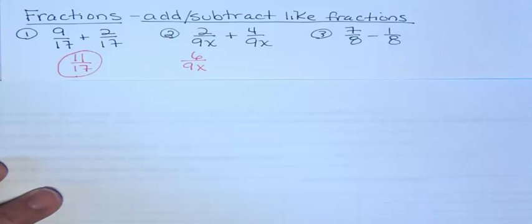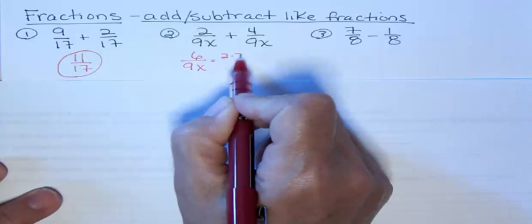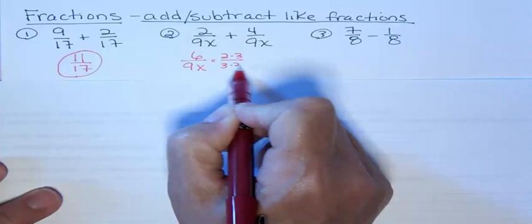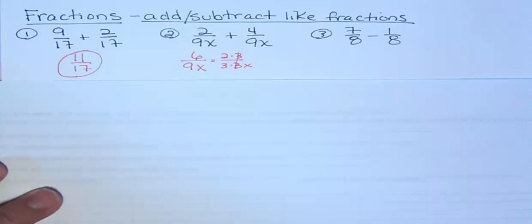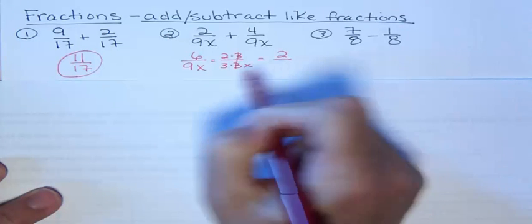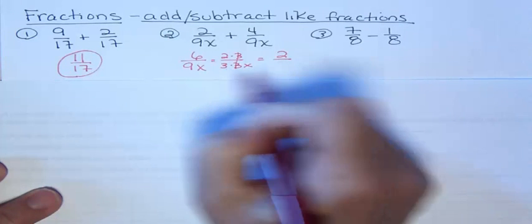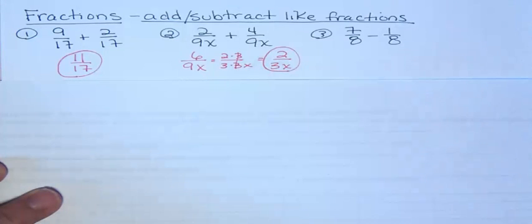You could write the prime factorization and cancel, that's what we showed in another video, or you could just see that they both have a 3 and divide both the top and the bottom by 3. But when you finish, notice that there's an x that's still in the bottom. We have 2 over 3x.